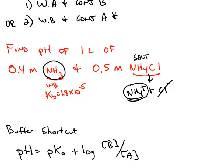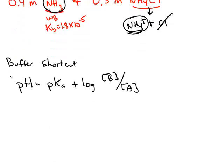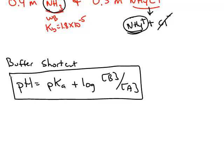When you recognize the solution as a buffer, there's a quick way to calculate the pH, which is called the Henderson-Hasselbalch formula. pH is equal to pKa of the acid plus the log of the concentration of base divided by acid.